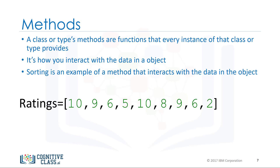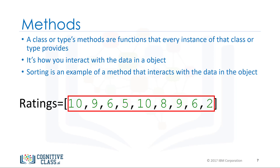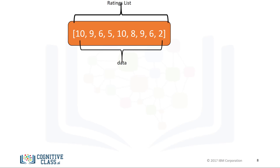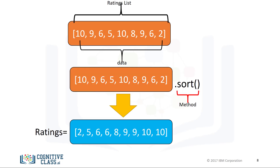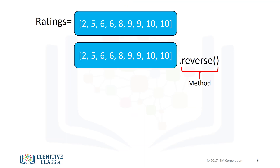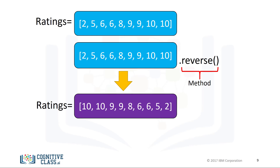Sorting is an example of a method that interacts with the data in the object. Consider the list ratings — the data is a series of numbers contained within the list. The method sort will change the data within the object. We call the method by adding a period at the end of the object's name and the method's name with parentheses. We call the sort method and this changes the data contained in the object — you can say it changes the state of the object. We can also call the reverse method on the list, changing the list again. In many cases you don't have to know the inner workings of the class and its methods; you just have to know how to use them.